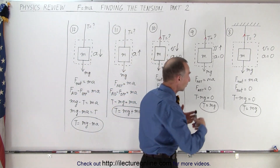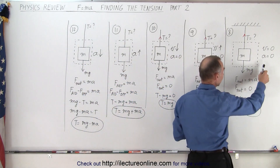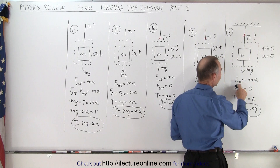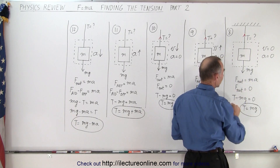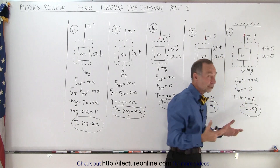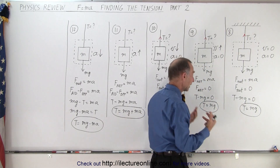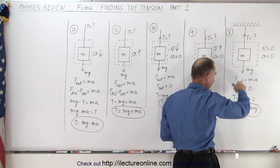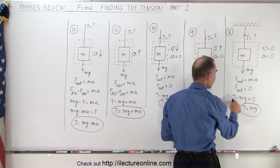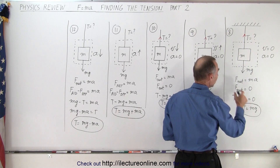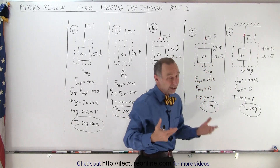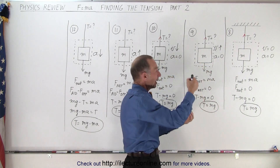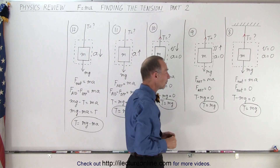In the first example, everything is stationary — there's nothing moving — so we know the acceleration is equal to 0. Since F net equals mass times acceleration, the net force must equal 0. There is no acceleration, and the net force is the tension pulling up and the force of gravity pulling down. So T minus mg equals 0, or the tension equals the weight of the object, which makes sense. You hold an object up from a string, and the tension in the string equals the weight of the object.